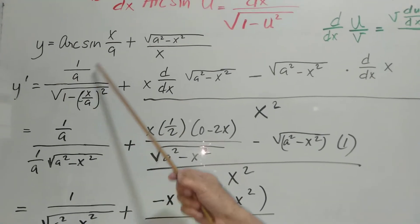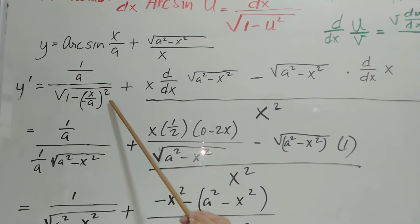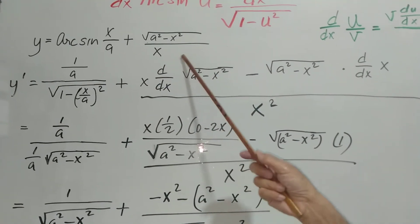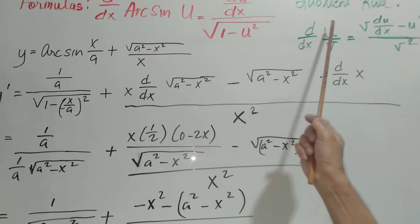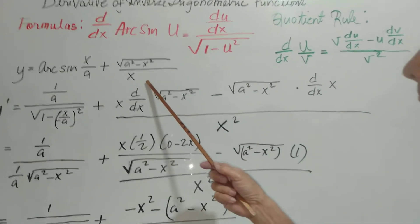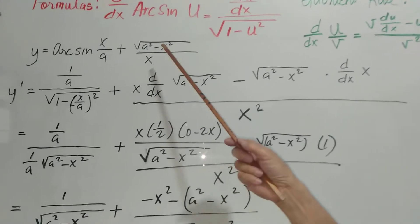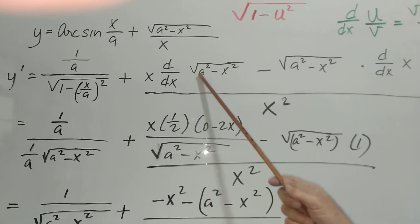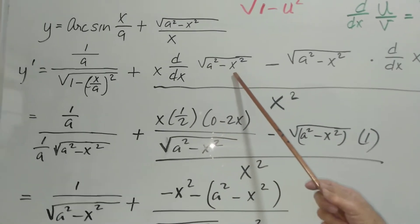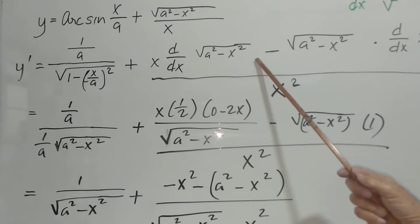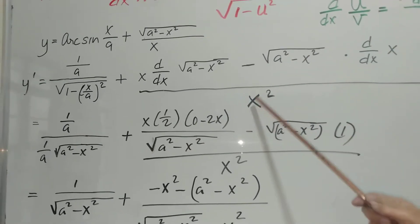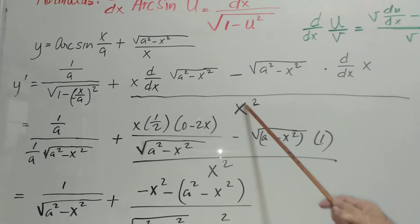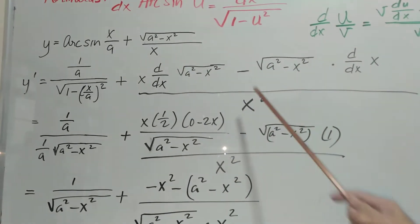This is the derivative of arcsin(x/a) plus the derivative of the quotient, using the quotient rule formula. The derivative of the quotient: x times the derivative of the numerator — which is the square root of a squared minus x squared — minus the numerator times the derivative of the denominator, which is x, all over the square of the denominator.